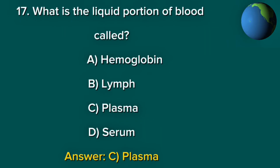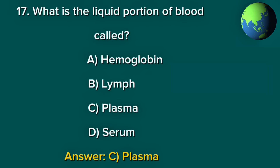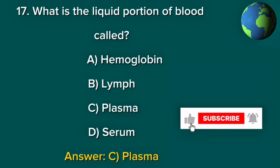Question 17. What is the liquid portion of blood called? A. Hemoglobin. B. Lymph. C. Plasma. D. Serum. Answer: C. Plasma.